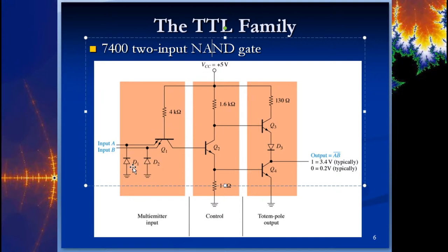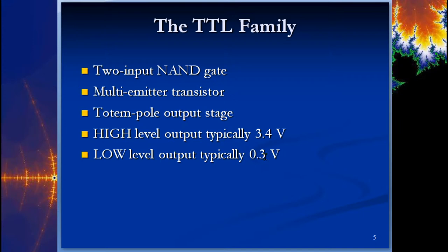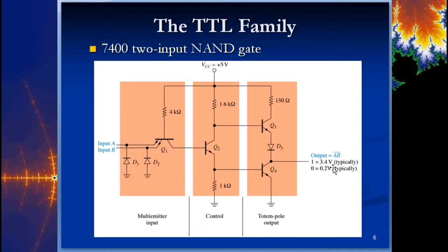It's just resistors, transistors, and a couple of diodes on the inputs to ensure proper high and low levels. The previous slide said the low output is typically 0.3 volts; here it says 0.2 — it's about 0.2 to 0.3. You'll find the exact value on the data sheet for each IC chip.